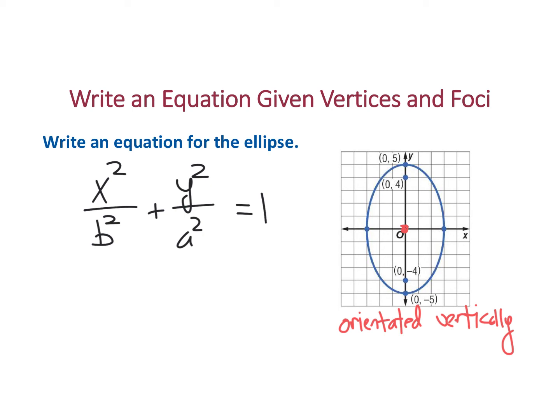But it is also good to know that if it's a vertical orientation, then the biggest one is underneath the y. So the longest is under the y, which makes sense. a is always bigger than b. So a matches with the y, and b is going to be matched with the x because it's the shorter distance.